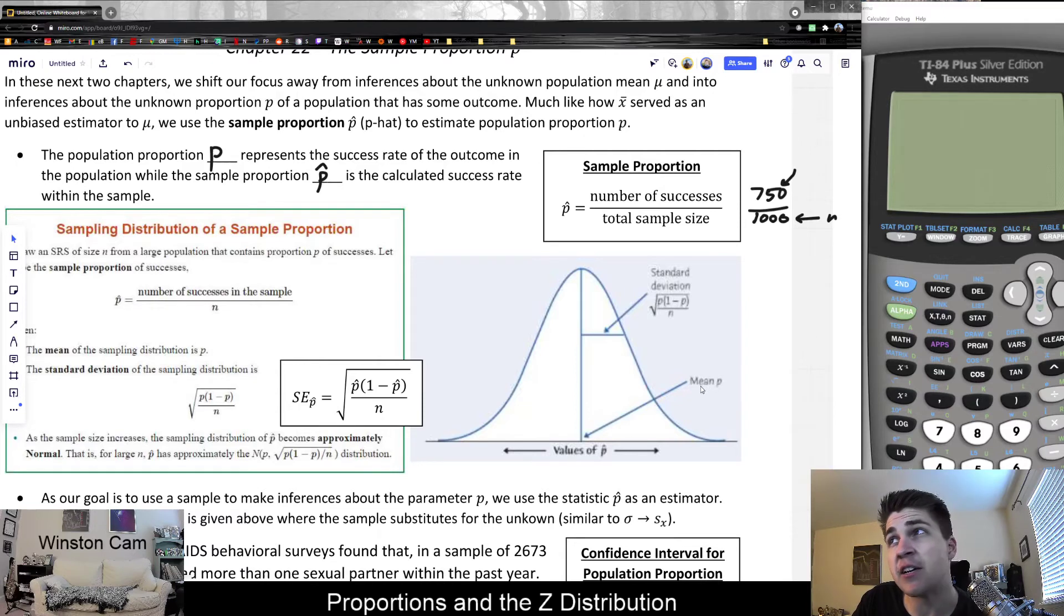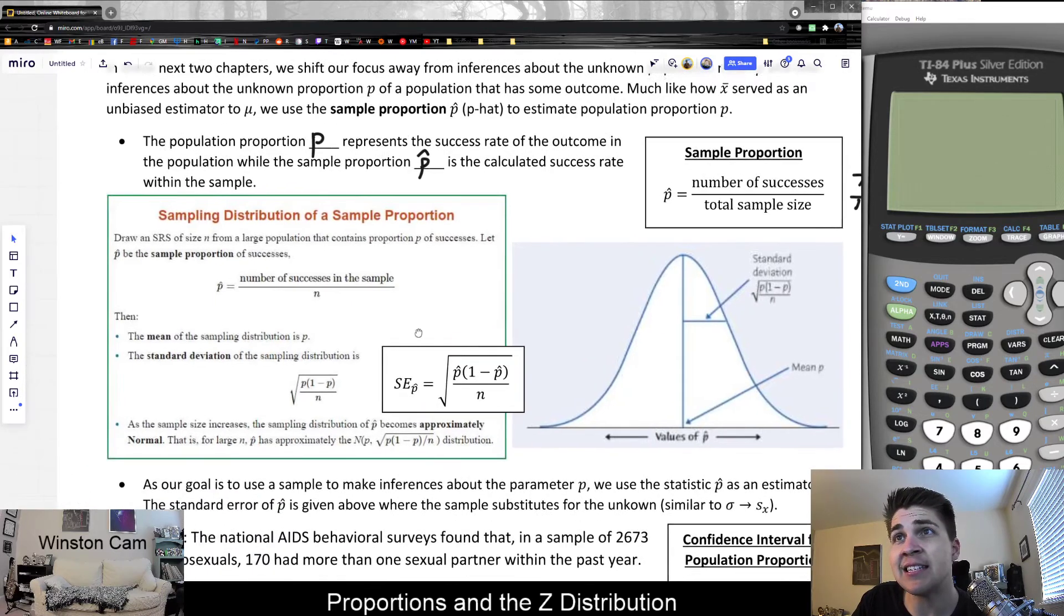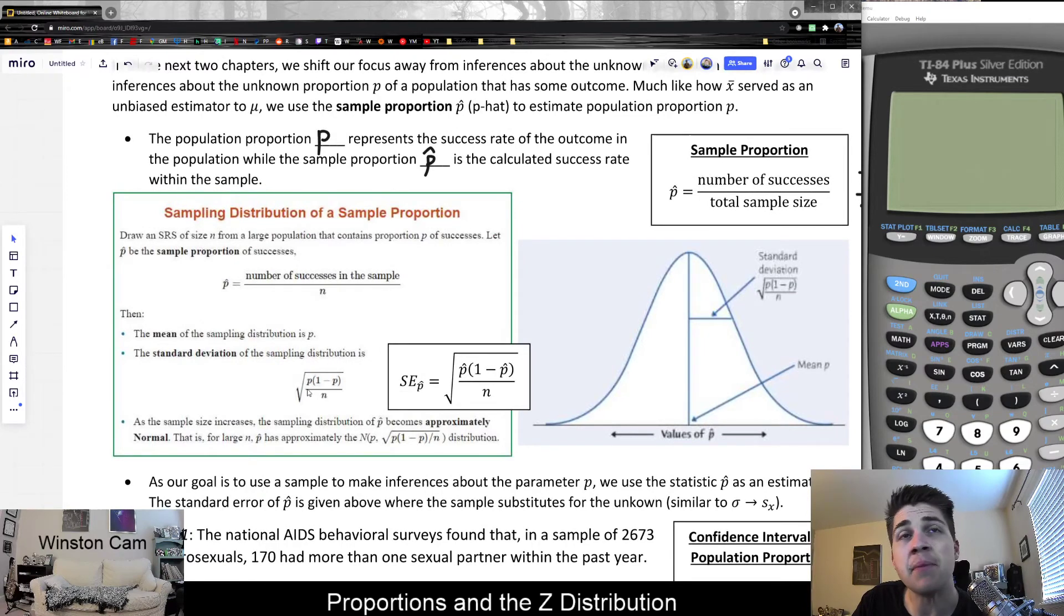The first thing that is a little bit different here is the standard deviation, we don't call sigma anymore, but you could call it sigma. The standard deviation of a proportion is given in the packet. The formula for the standard deviation of a proportion distribution is the square root of p times 1 minus p divided by n.